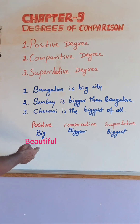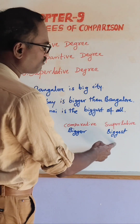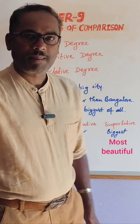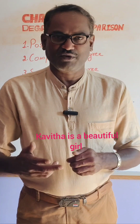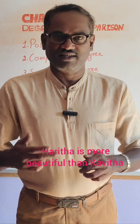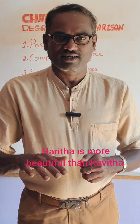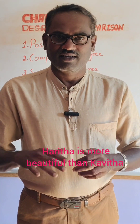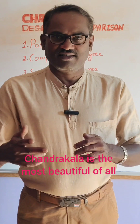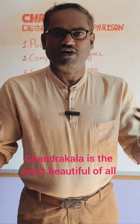Beautiful, more beautiful, most beautiful. Kavitha is a beautiful girl. Arita is more beautiful than Kavitha. Senthekala is the most beautiful of all.